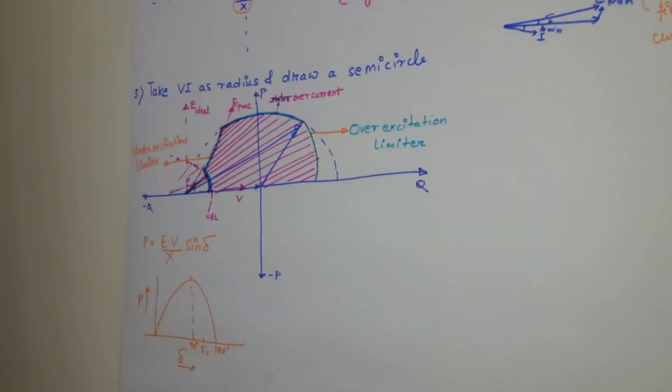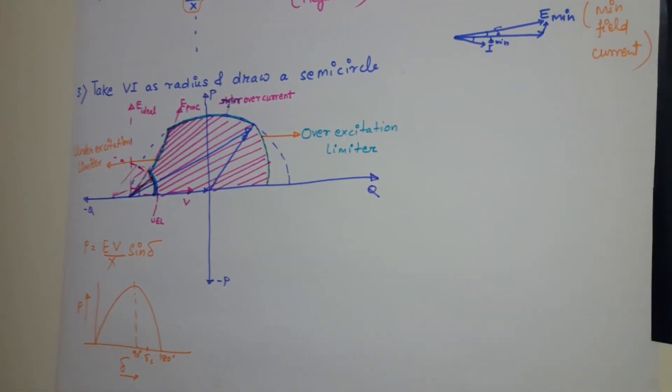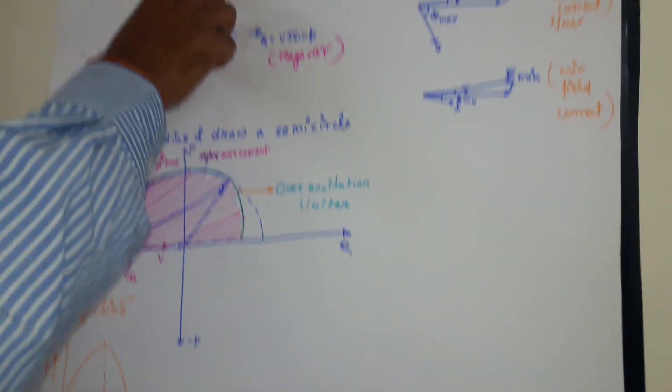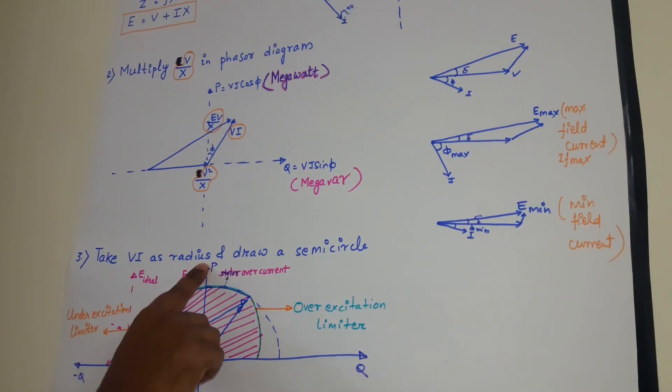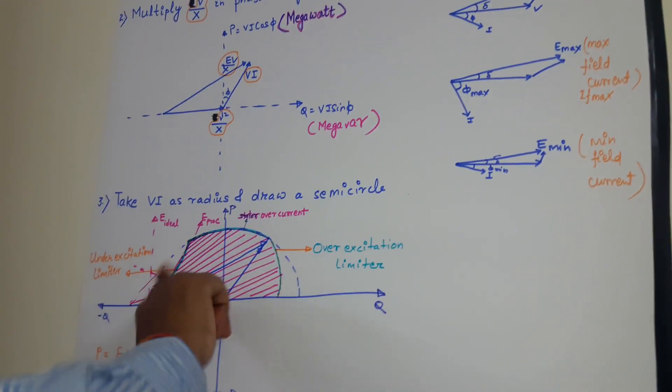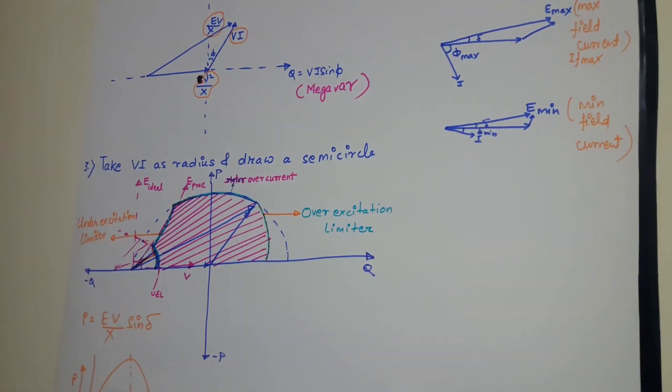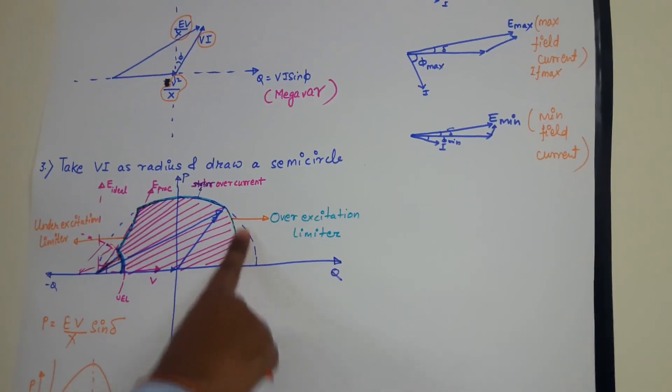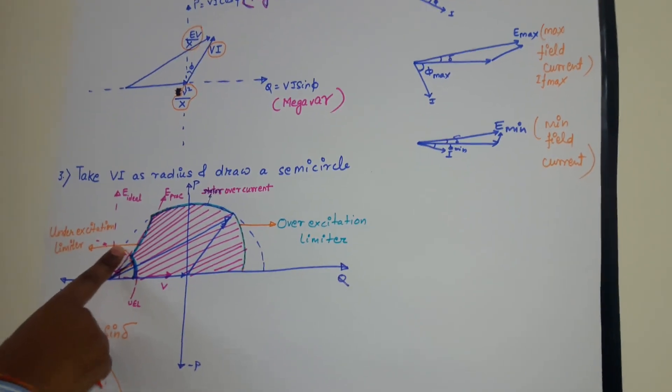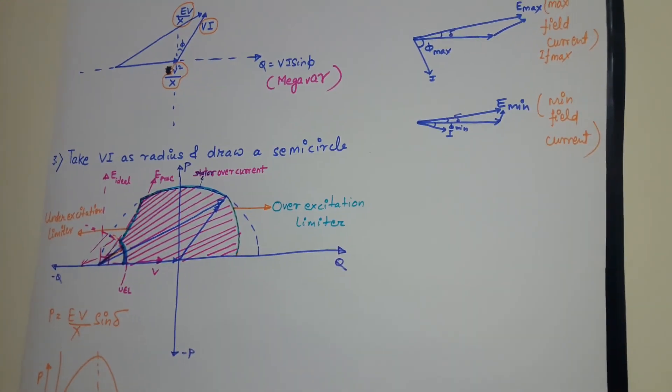But the generator has certain limitations. If suppose I will take this V as radius and draw a semicircle, this is the semicircle. But the generator cannot operate at this zone and this zone. Let me explain you the reason behind it.